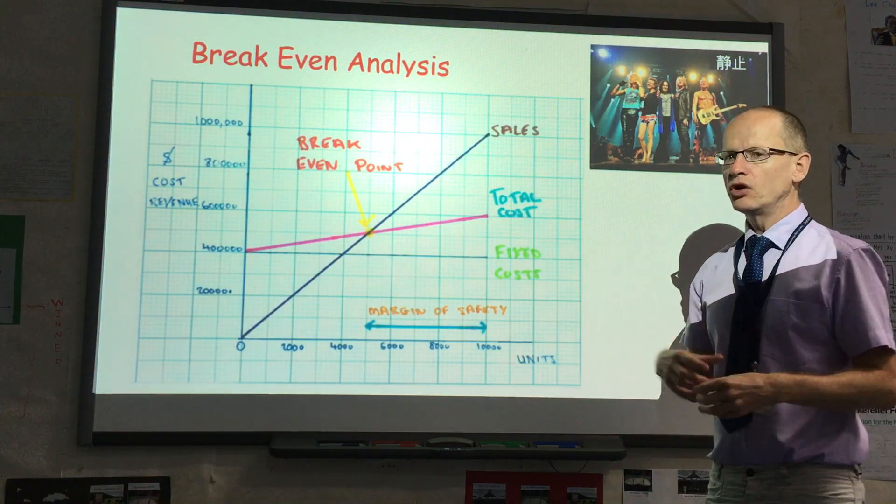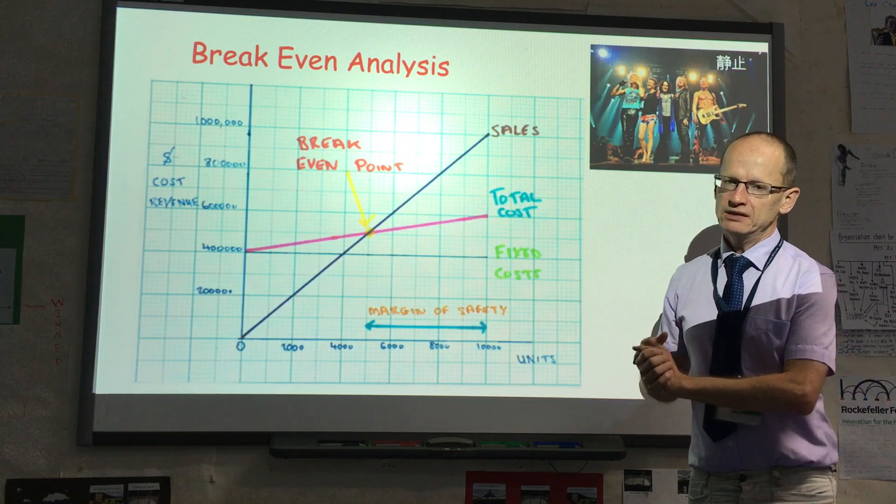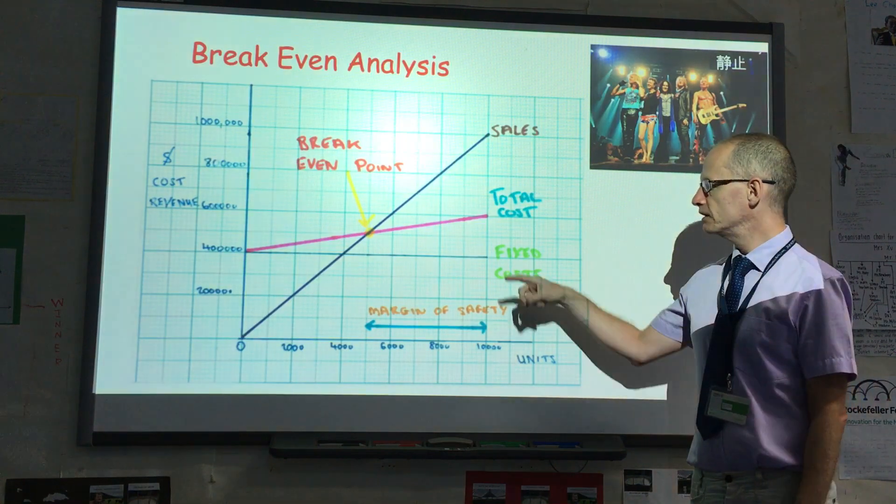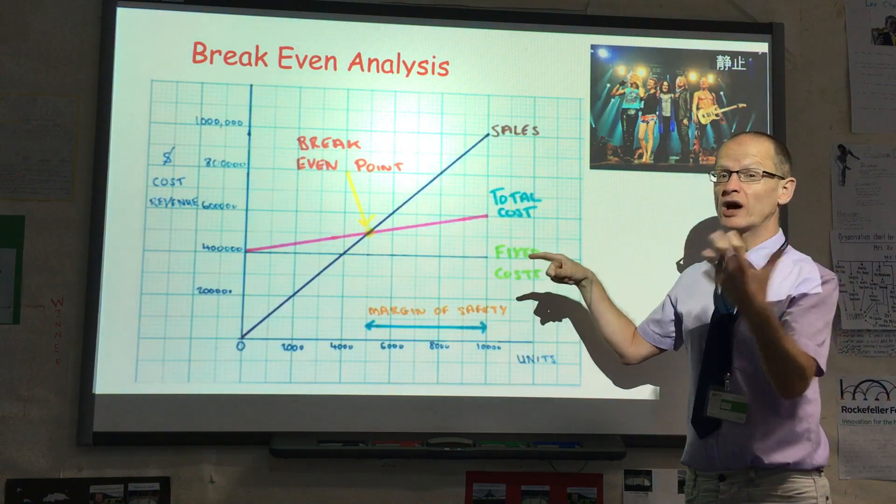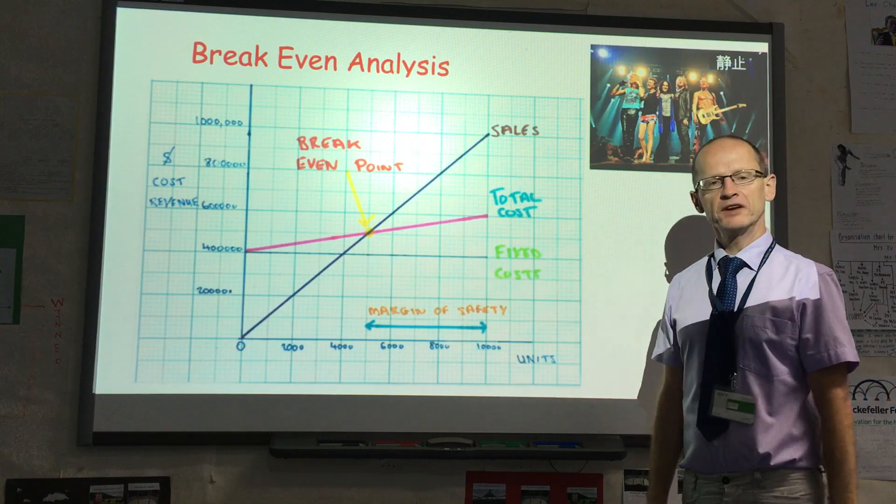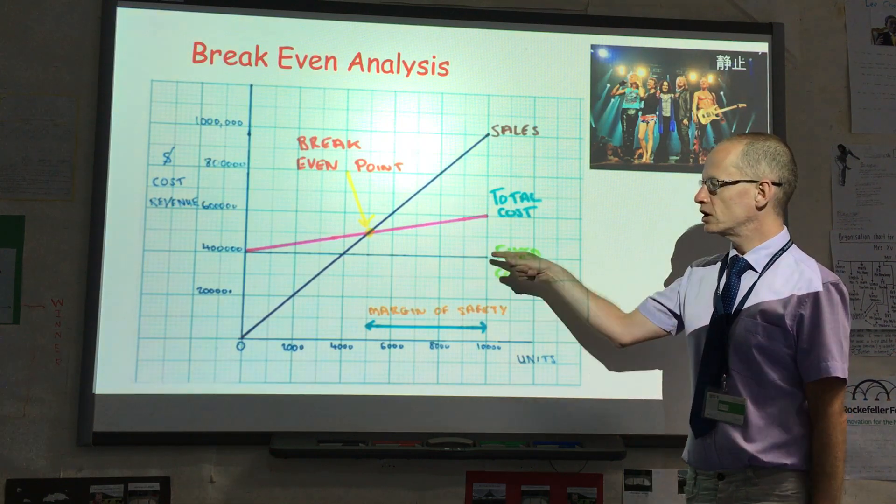Now, we only draw three lines on the break-even graph itself. The first one I've drawn, and this is the first one I always start with, is the fixed costs. So the fixed costs are $400,000.